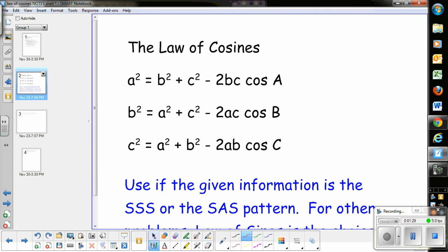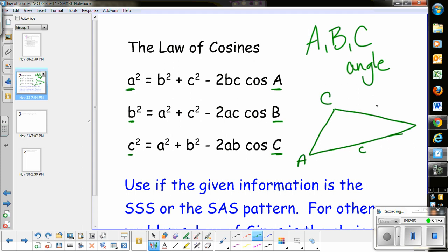I've written the Law of Cosines three times, but it's not three different formulas—just a labeling issue. Capital letters refer to angles, whereas lowercase letters refer to sides. If this is angle C, lowercase c is across from it. If this is capital A, lowercase a is across from it.